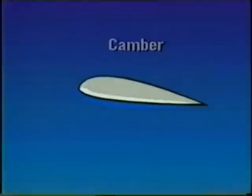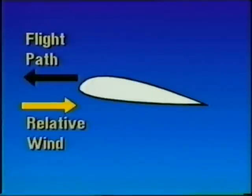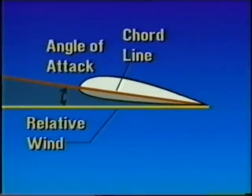Any object moving through the air encounters a relative wind. This wind is always parallel to and opposite the flight path. The angle formed between the relative wind and the chord line is called the angle of attack.